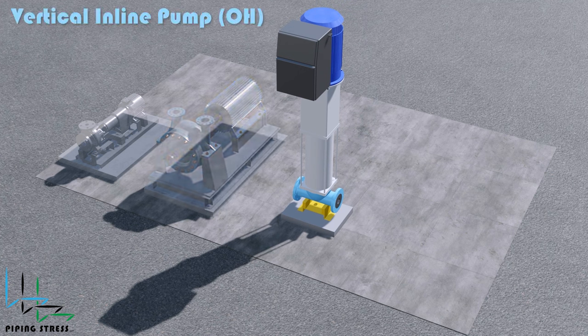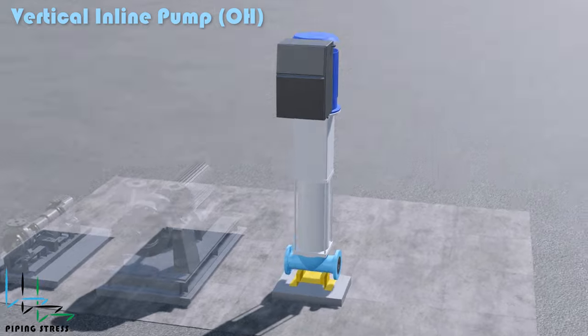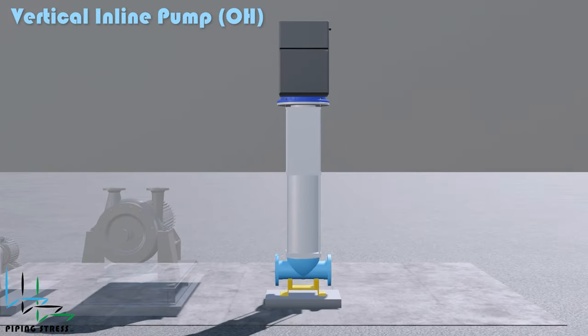Vertical Inline Pump: This is actually an overhung pump but in a vertical position. The impeller is mounted at the end of the shaft.